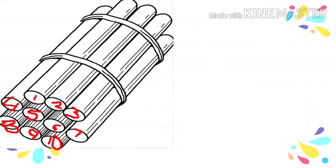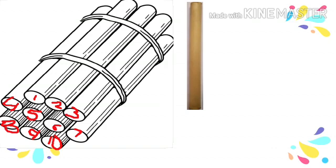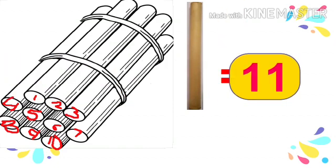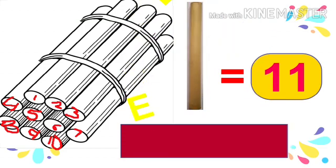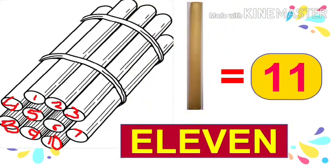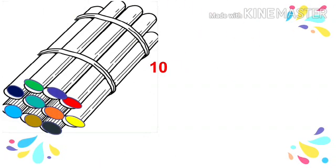See a bundle of sticks. Number 10 — there are 10 sticks in a bundle. The numbers 1 to 10 are also written on the sticks. If one more stick comes, then total how many sticks are there? Let's count: one, two, three, four, five, six, seven, eight, nine, ten, and this one — eleven. E-L-E-V-E-N, 11.